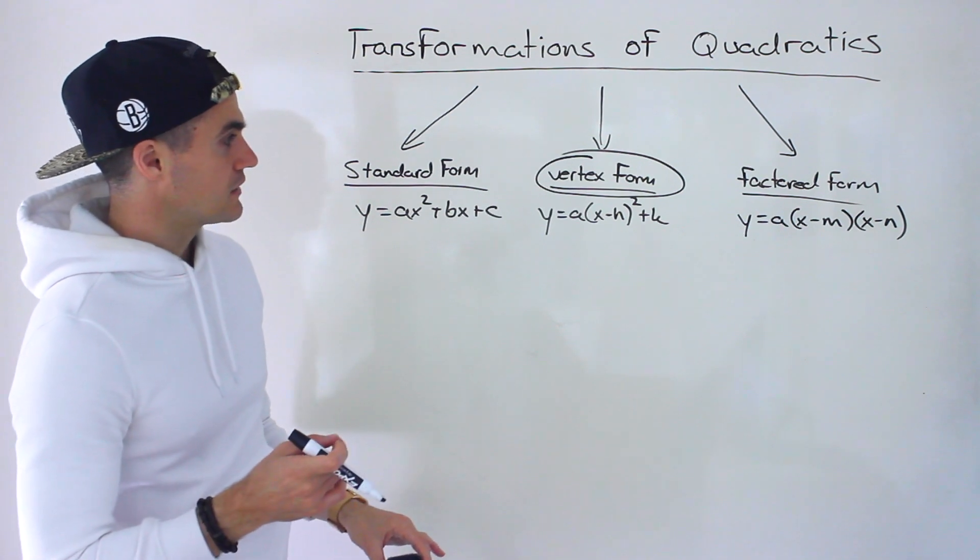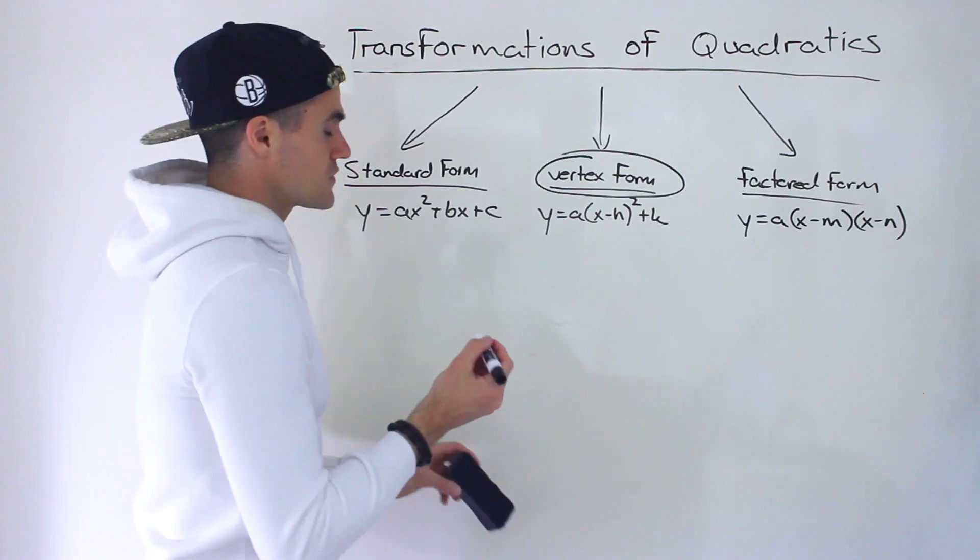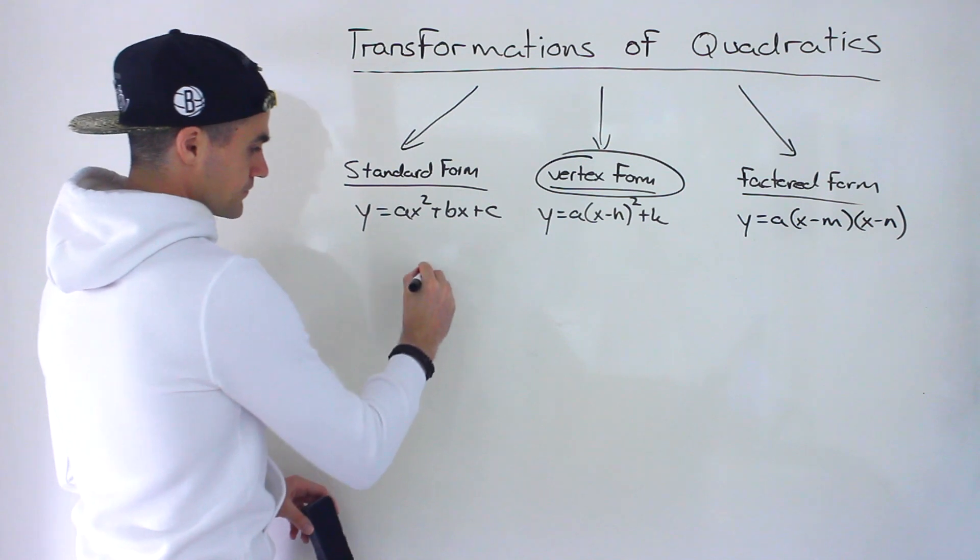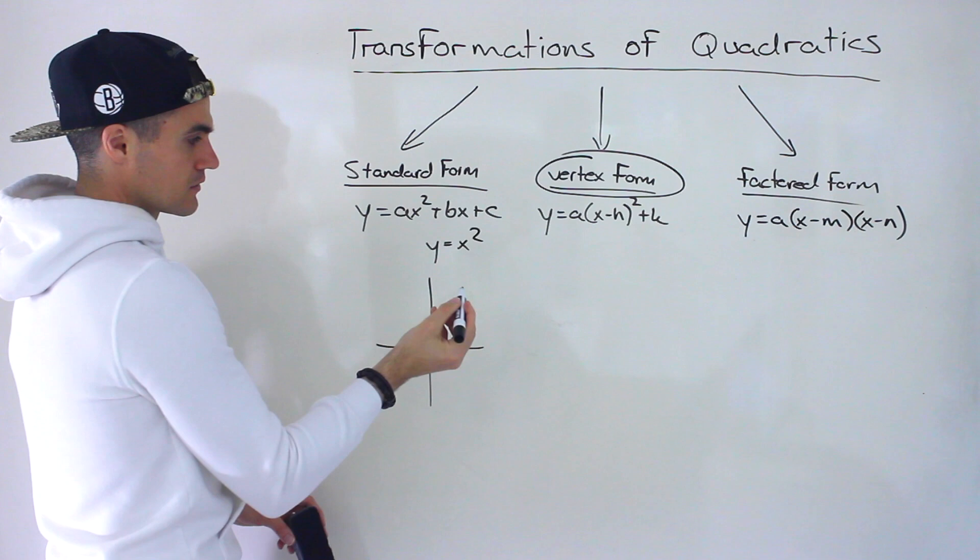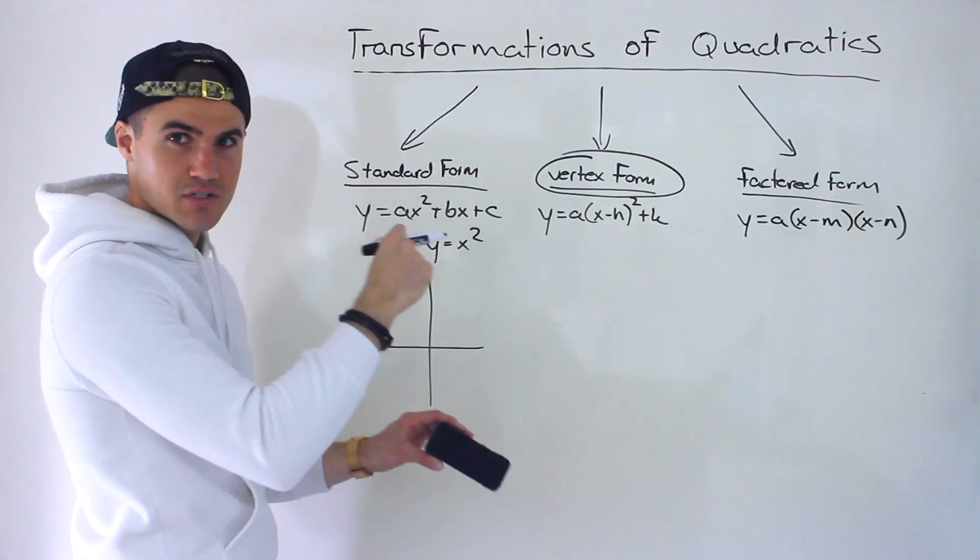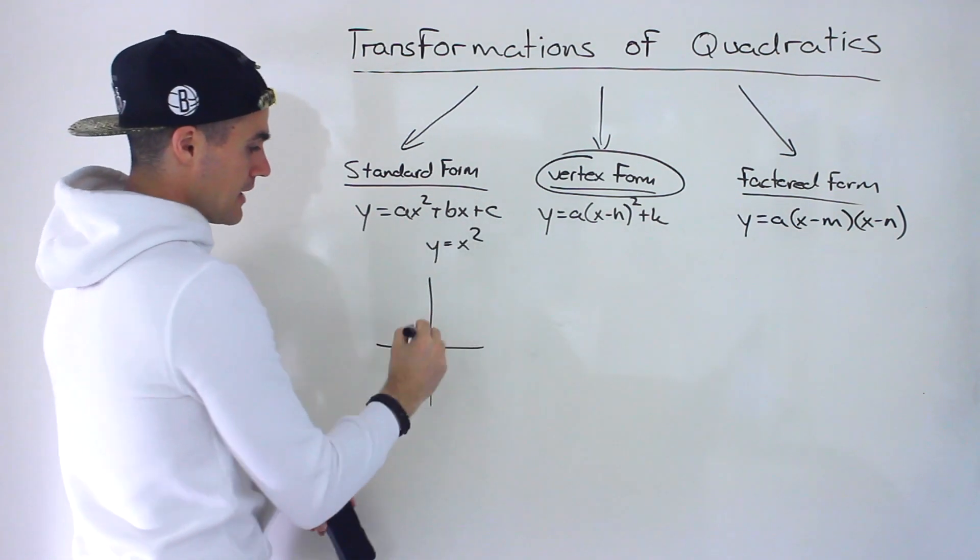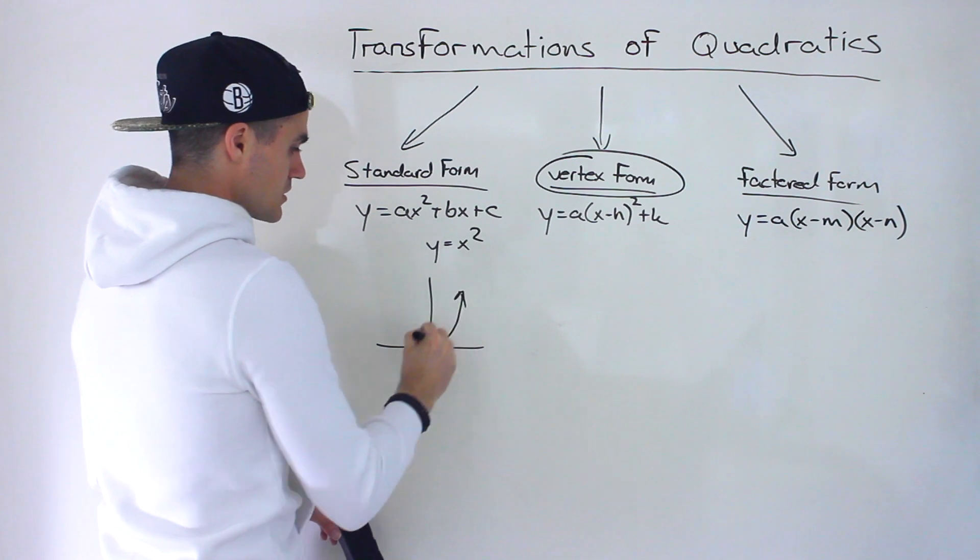And more specifically, what we mean by transformations is that we're going to have our base function y equals x squared. That's just the base, or sometimes you'll see it called the parent function, which we know just looks like this.